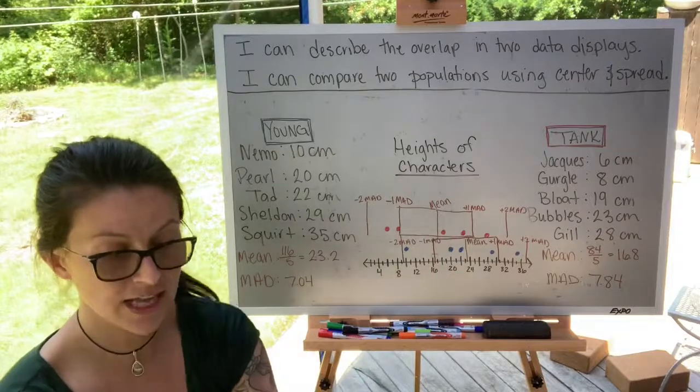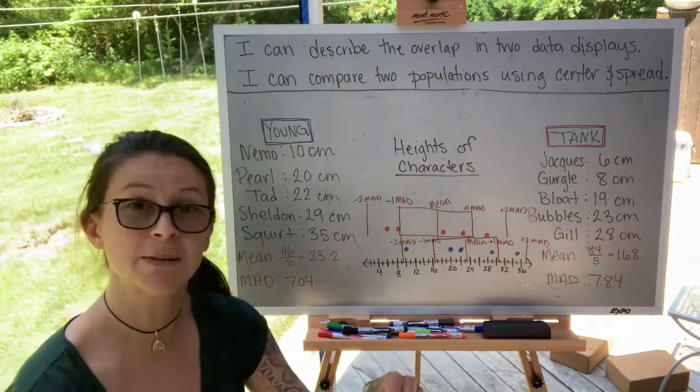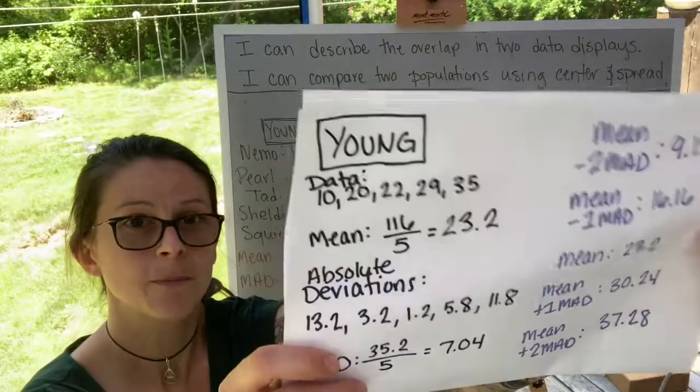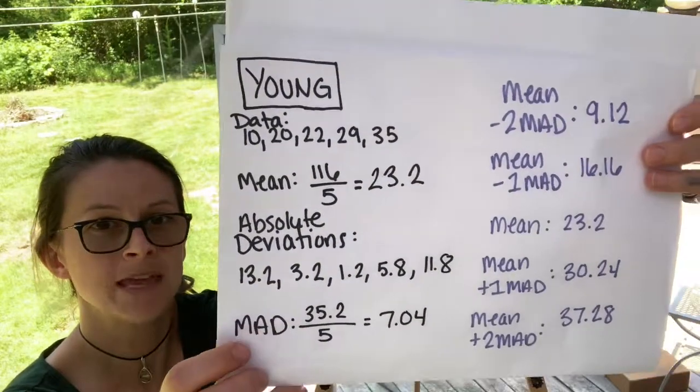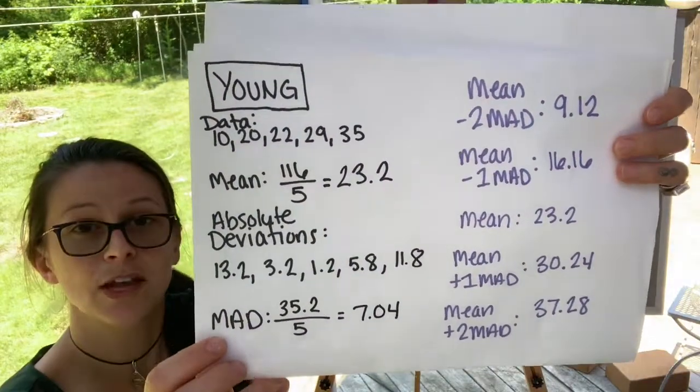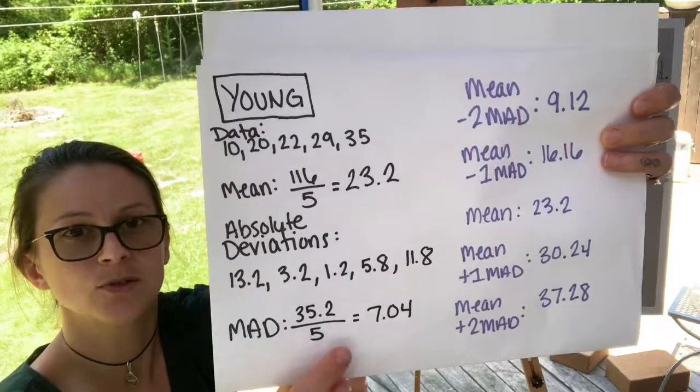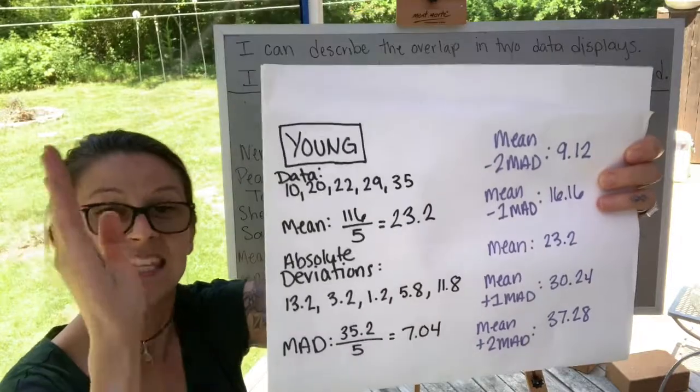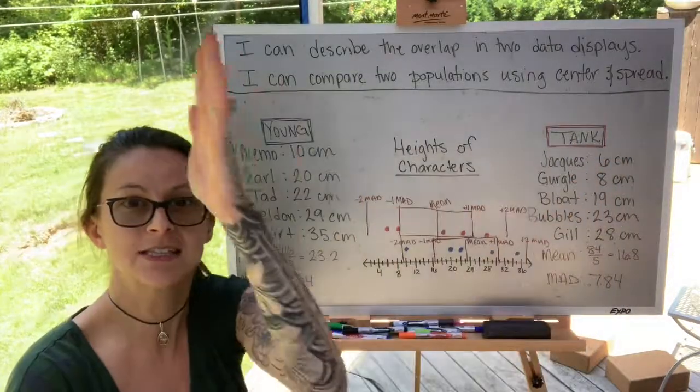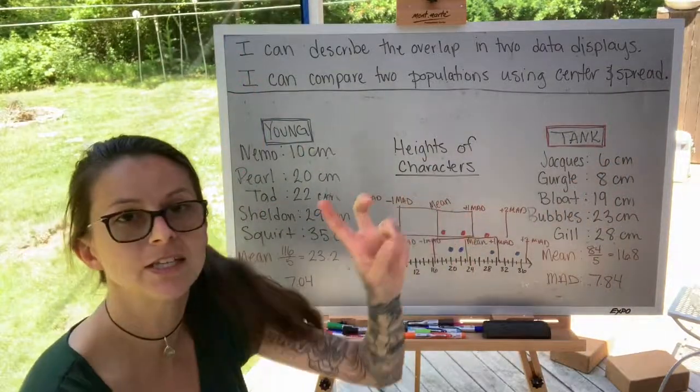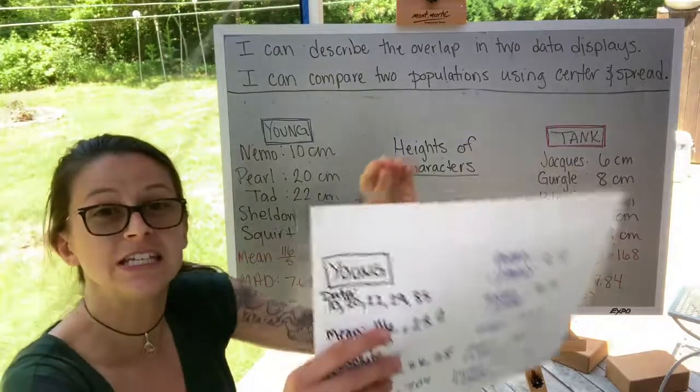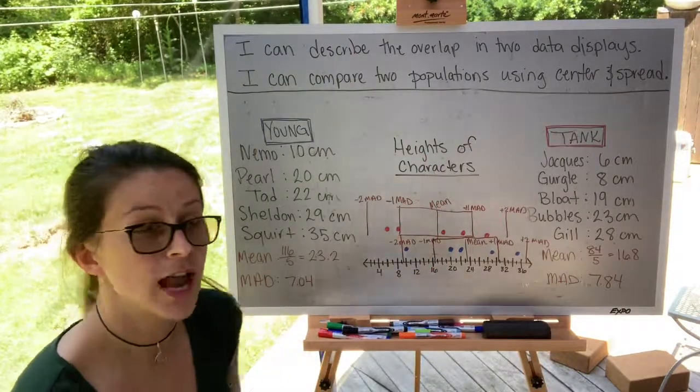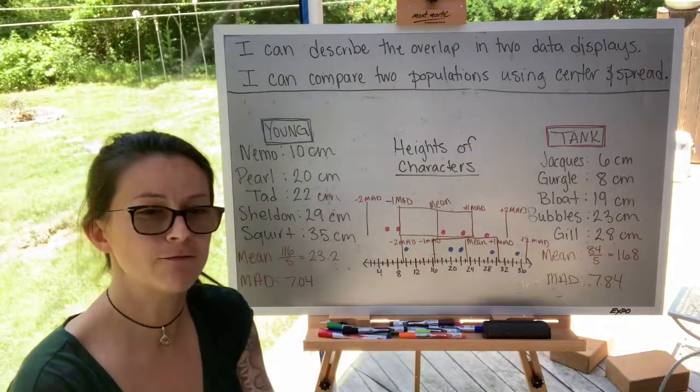So here what I've done is I've calculated the mean and the mean absolute deviation for both samples. The young characters have a mean of 23.2 and a mean absolute deviation of 7.04. So I can take the center, which is the mean, and that's the center point, that is the middle of the data, and we are going to deviate away from it, grouping them by mean absolute deviation, how far away they deviate from the mean.